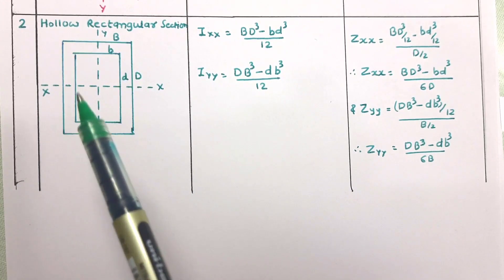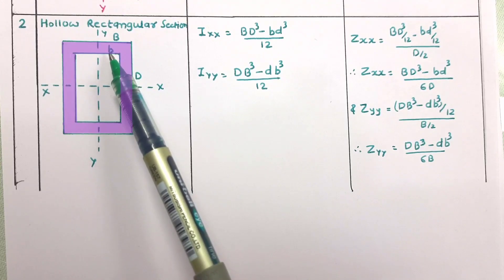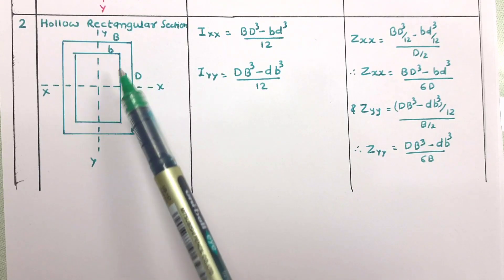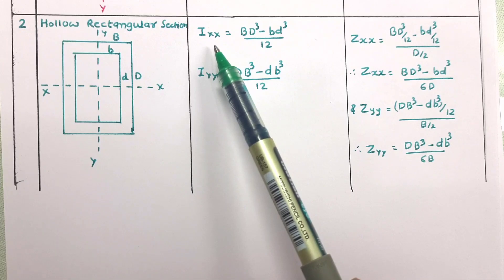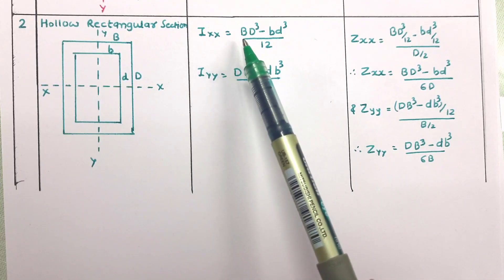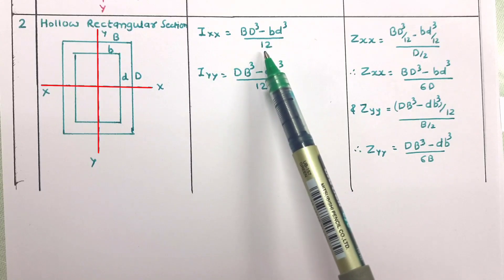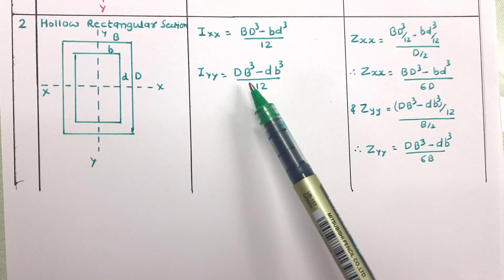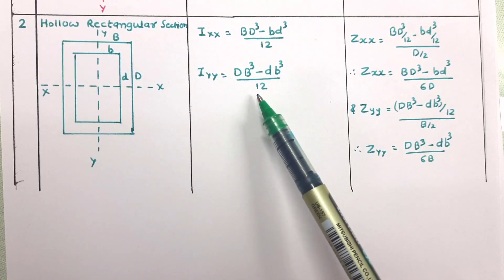The hollow rectangular section has outer width B and inner width b, outer depth D and inner depth d. The moment of inertia about the xx axis is I_xx = (BD³ − bd³)/12, and about the yy axis is I_yy = (DB³ − dB³)/12.